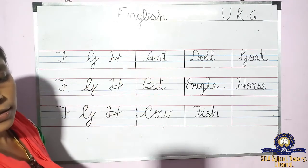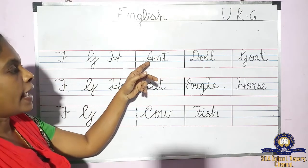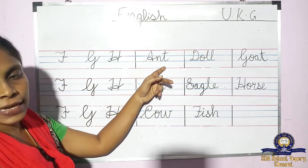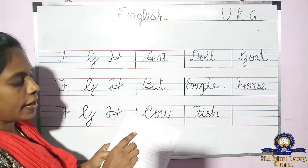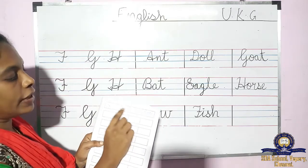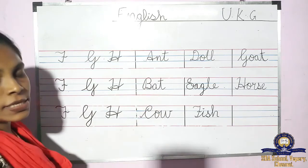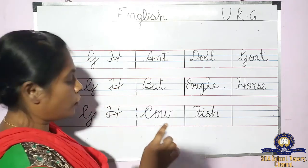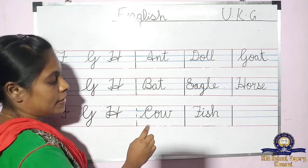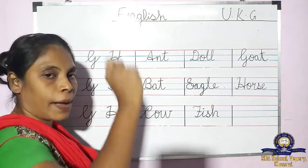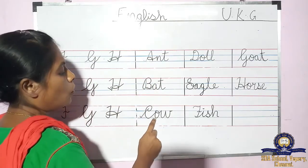A, N, T — ant. Same way, B, A, T — bat. You have to write here inside. It's already given here. Same way, you have to write. B, A, T — bad. Then C — no need to worry about this. You have to write like this, this is only cursive C. If it's not coming, practice, it will come. C, O, W — cow.